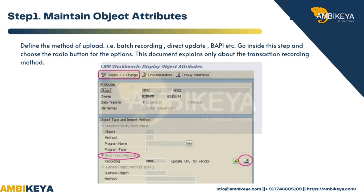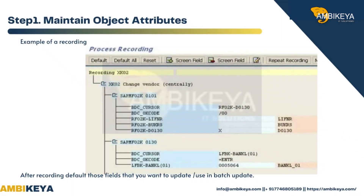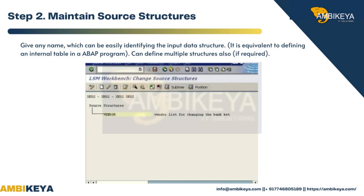This document explains only the transaction recording method. You can toggle between display and change options using the standard button. Select the object type and import method as batch input recording. Once selected, click on the Overview button to go to the recording overview. After recording, default those fields that you want to update or use in the batch update. Step 2: Maintain Source Structures — give any name that can easily identify the input data structure, equivalent to defining an internal table in an ABAP program.